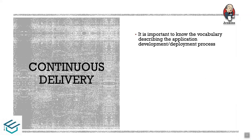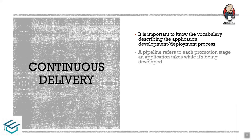Next is continuous deployment. Continuous delivery and continuous deployment are different. The pipeline refers to each promotion stage that an application takes while it's being developed. In our pipeline, we have promotion stages: code goes through build, test, and then delivery to the development server, then to the test server.